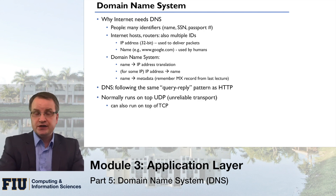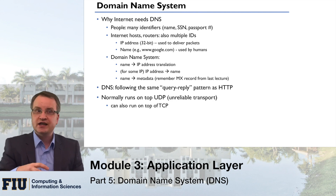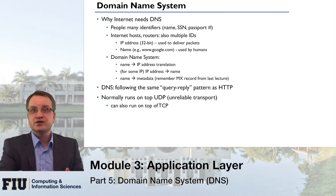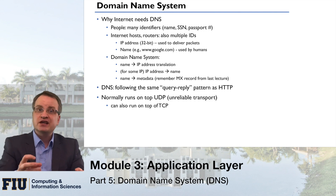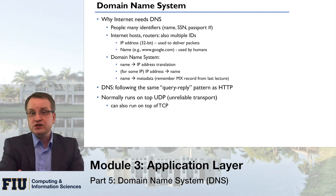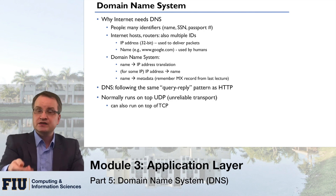DNS has some similarities to HTTP — it uses a simple query-reply pattern. Similar to HTTP, everything is named, and every time you query something, you query it by name, providing the name and type of the record you'd like. One difference is that DNS runs on top of UDP normally. You can run DNS on top of TCP, but people usually don't because of the additional latency of establishing a TCP connection — usually there's only one packet exchange, asking a question and immediately getting a reply back.